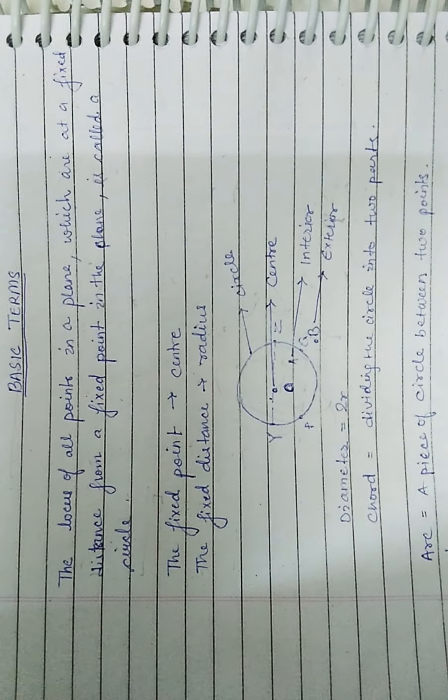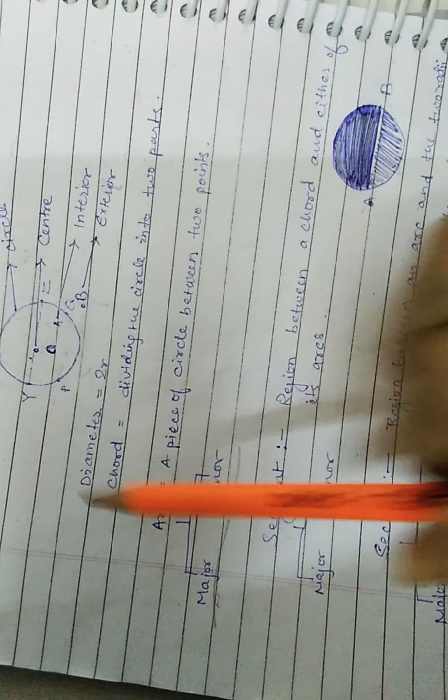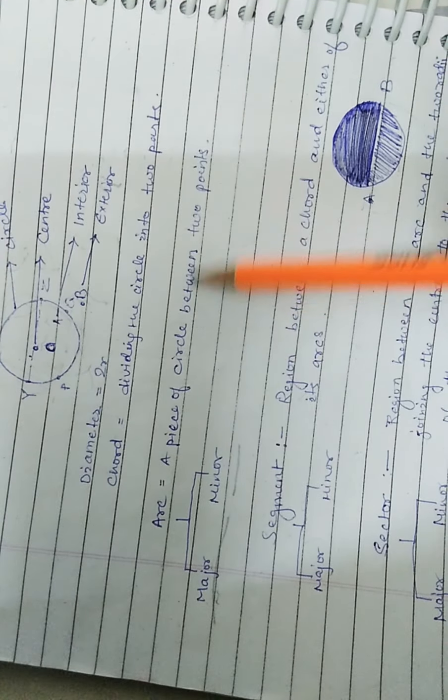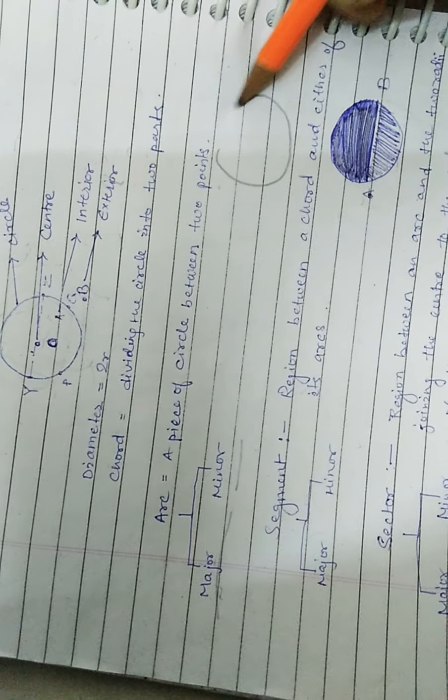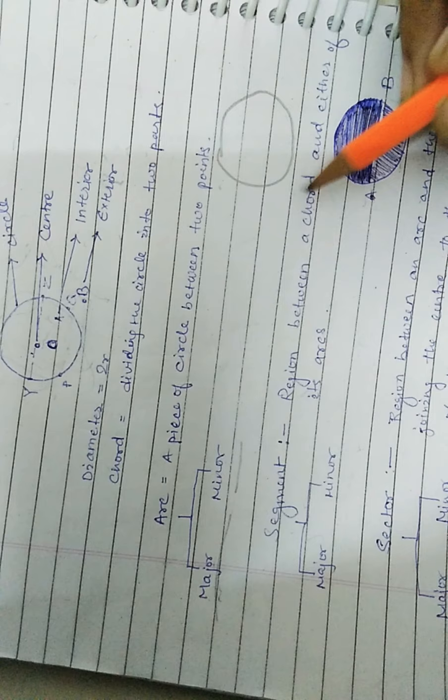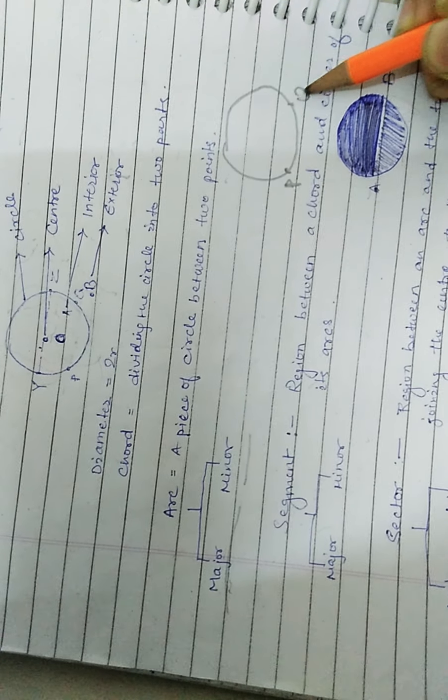Let us talk about the arc. An arc is a piece of circle between two points. As I have drawn here in this figure, here is P and here is Q. The smaller one is an arc and this is also an arc.